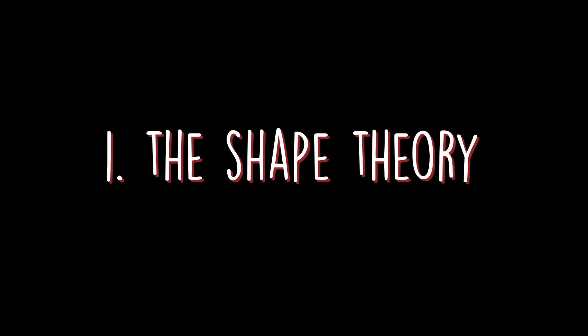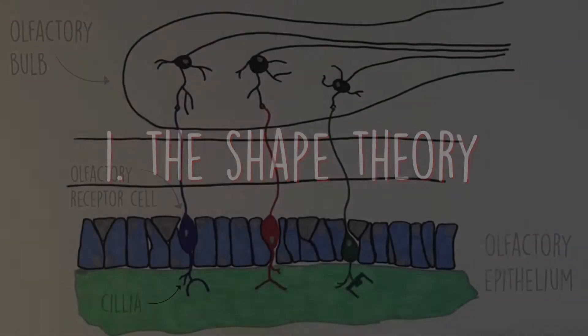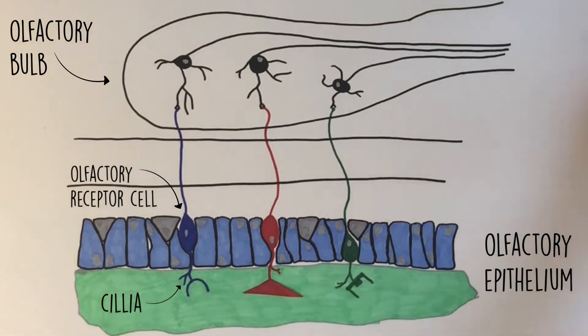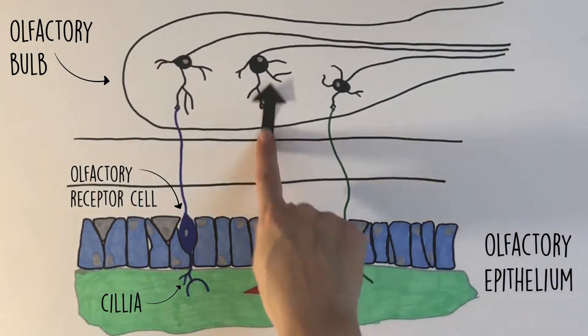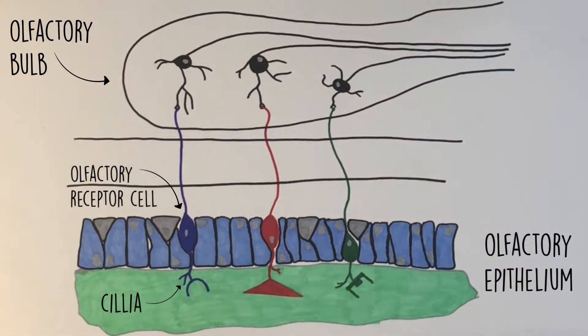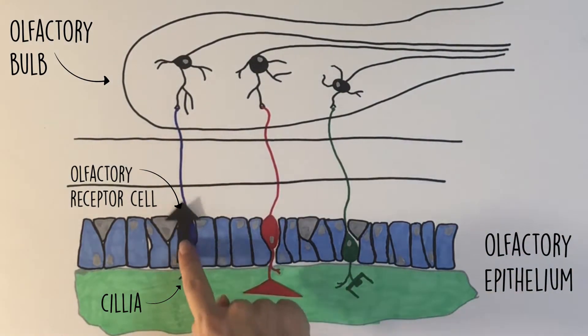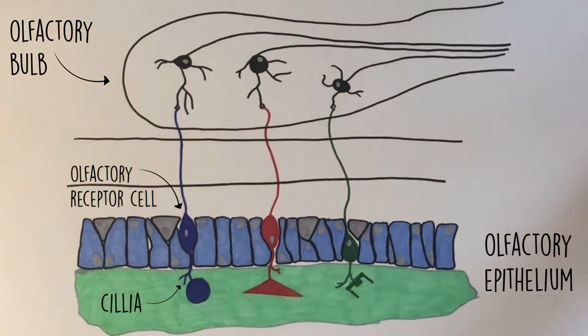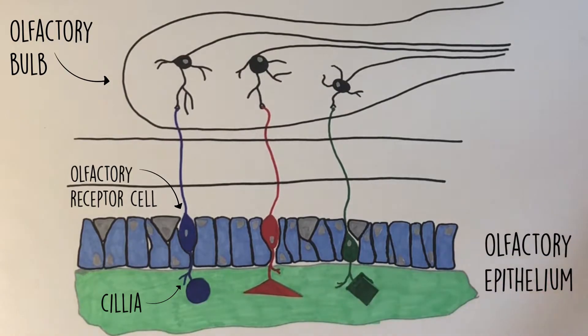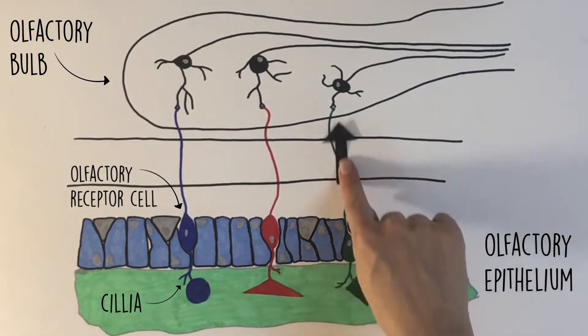There are two main theories of how the sense of olfaction works. The first is the shape theory, where a molecule's specific shape is thought to be complementary to olfactory receptors, allowing it to bind like a lock and key, where various weak bond interactions cause a conformational change of the receptor that triggers a signal to be sent to the brain.